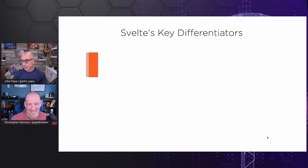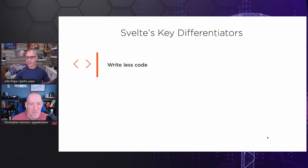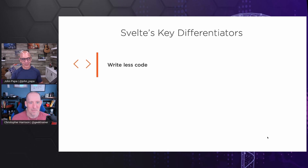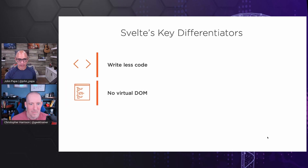The big differentiators — I like to break things into three, the rule of three. Everybody wants to write less code. The less code you write, the less mistakes you can make, the less bugs you can have, the less maintenance, the less refactoring, and frankly the easier it is to get going. Svelte's all about that.